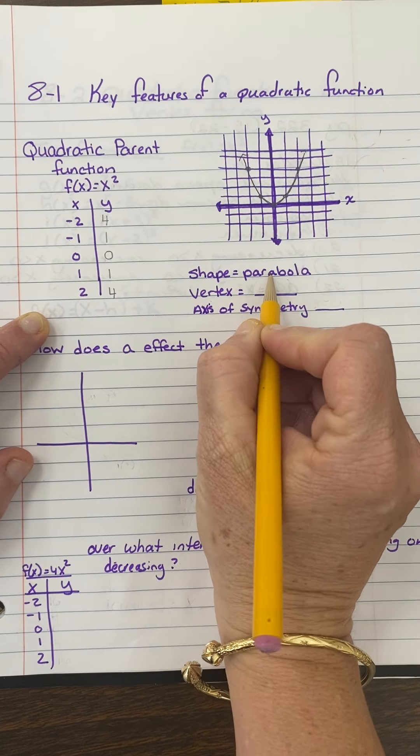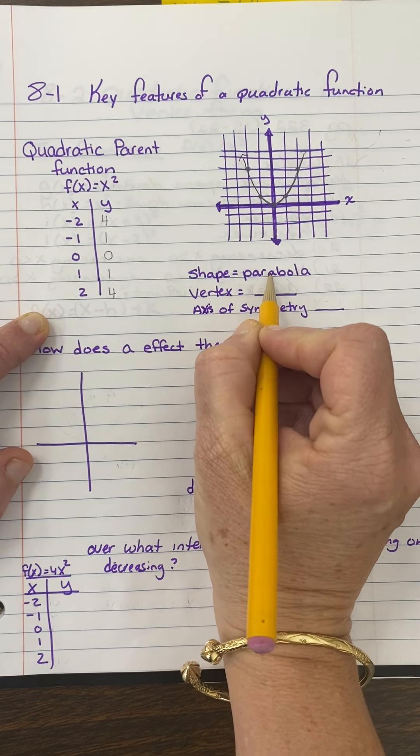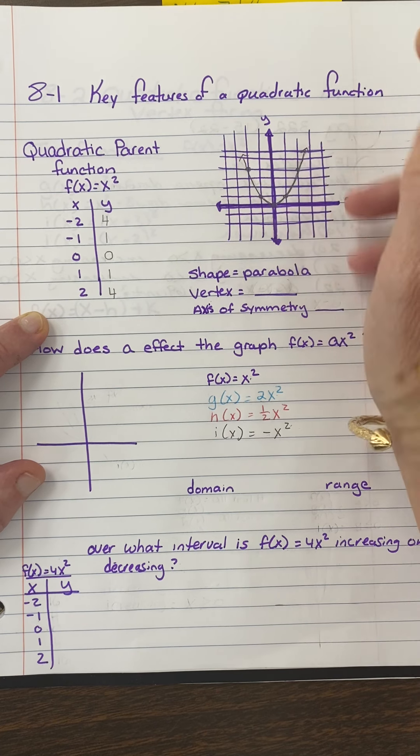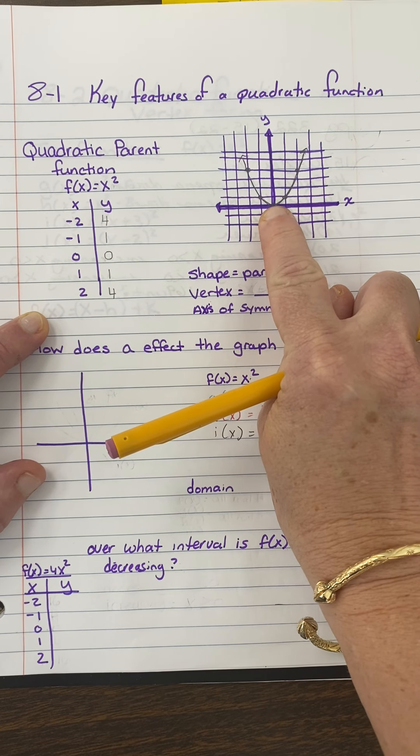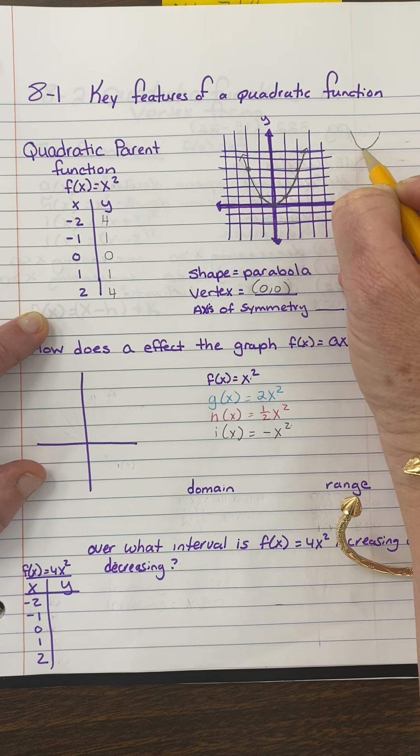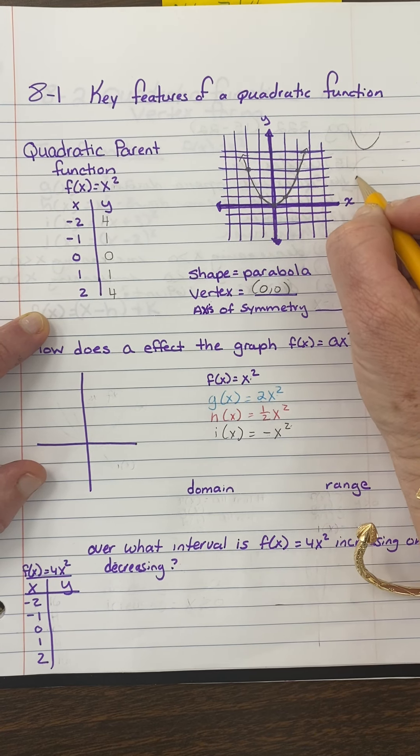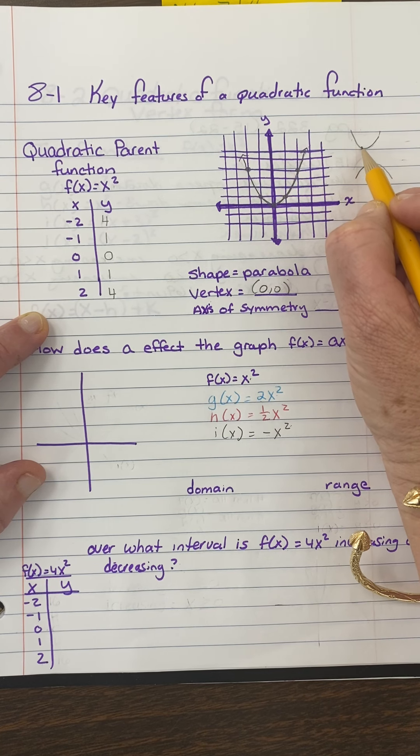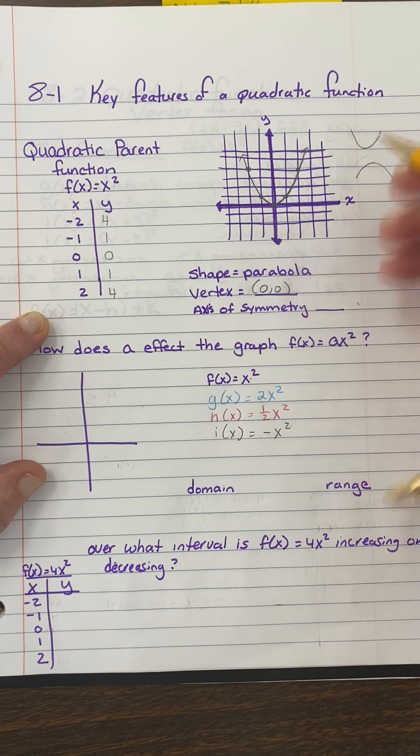Now there's some points that we need to know, or some parts of this parabola that we need to know. And one very important part is the vertex. The vertex is this point right here, and it is where the parabola goes down, goes down, see how it's starting to go back up? So this point right here would be the vertex. And if it was going this way, then this point right here would be the vertex. So it's either the lowest point of the parabola or the highest point.